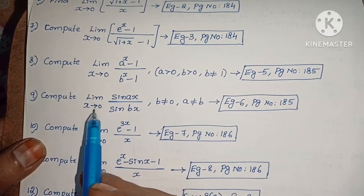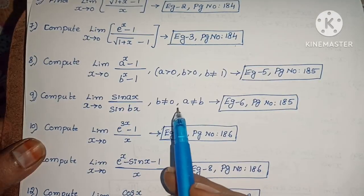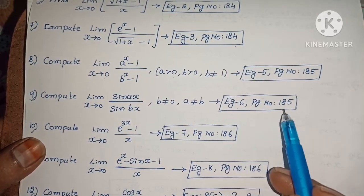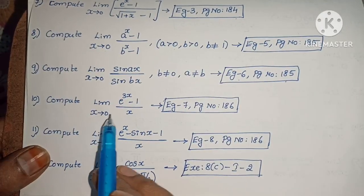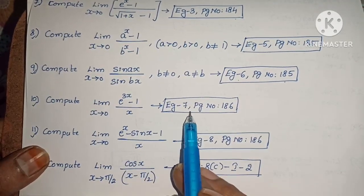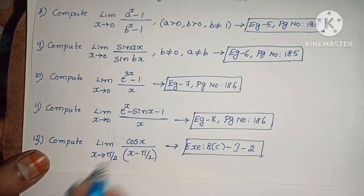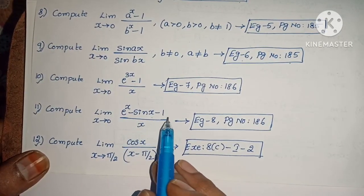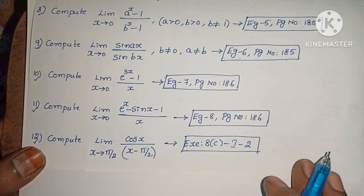Next: Compute limit extends to 0 of sin ax by sin bx, where b not equals to 0 and a not equals to b. Example 6, page number 185. Next: Compute limit extends to 0 of e power 3x minus 1 by x. Example 7, page number 186. Next: Compute limit extends to 0 of e power x minus sin x minus 1 by x. Example 8, page number 186.